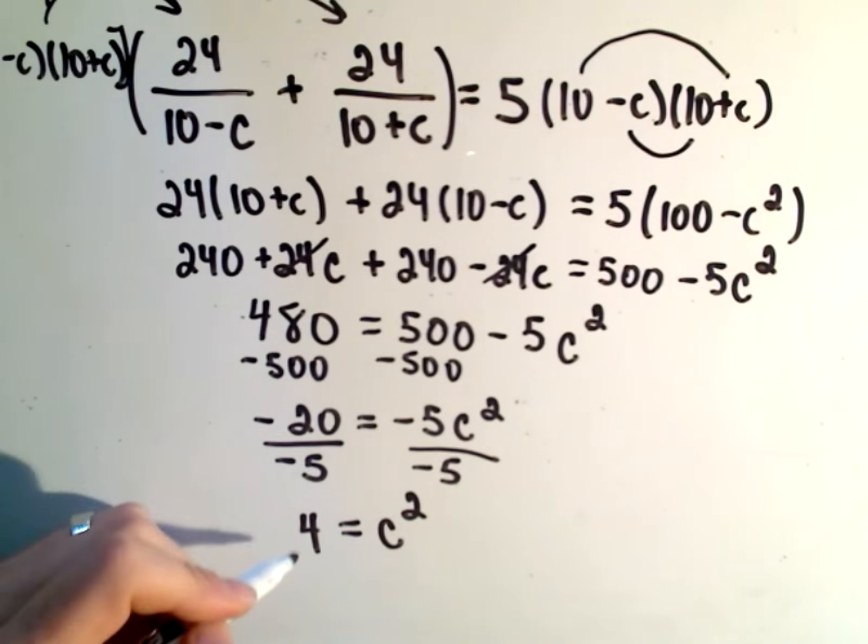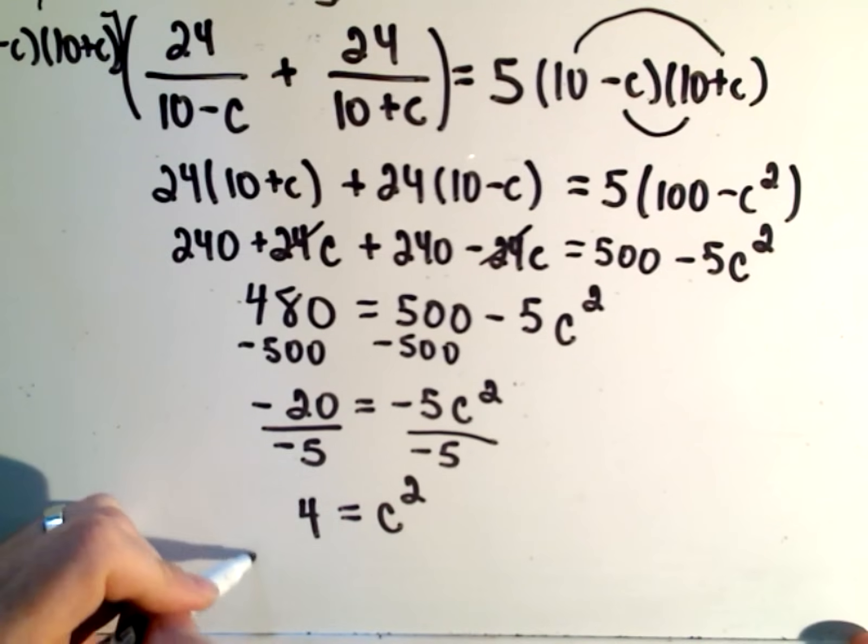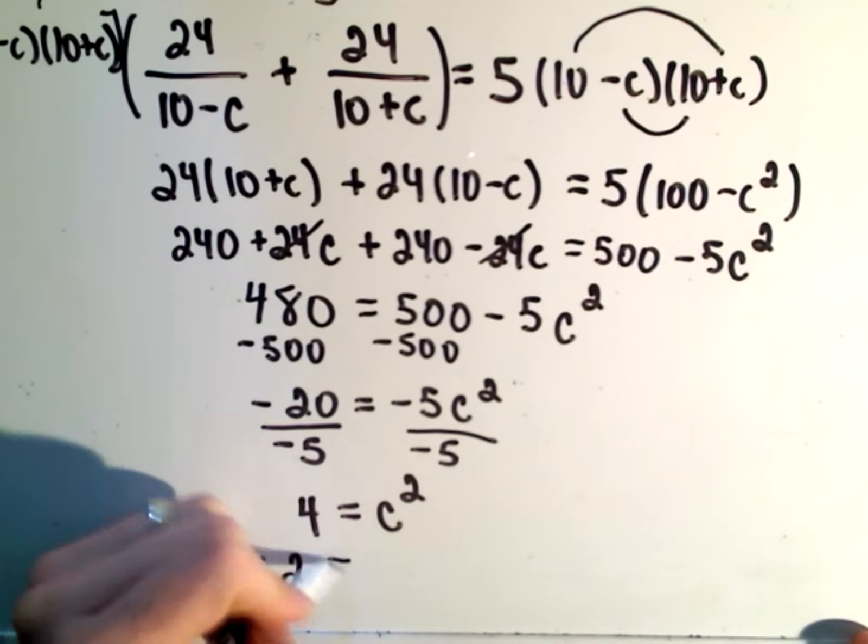And if I take the square root of both sides, remember, that's how we get rid of squares, I'll get positive negative 2 equals C.